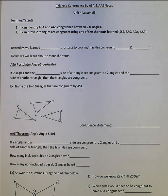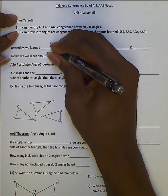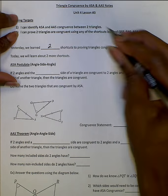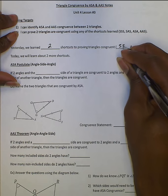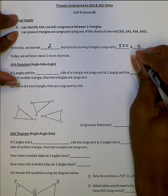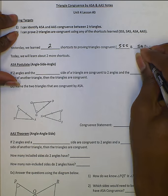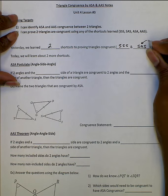At the end of this video you should be able to identify angle-side-angle and angle-angle-side congruence between two triangles, and you should be able to prove two triangles are congruent using any of the shortcuts learned so far: side-side-side, side-angle-side, angle-side-angle, and angle-angle-side. Yesterday we learned two shortcuts — side-side-side and side-angle-side.